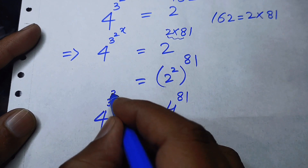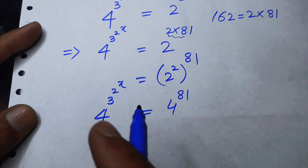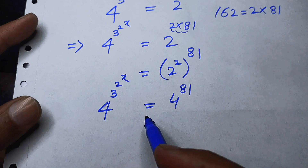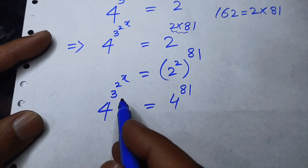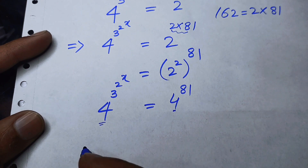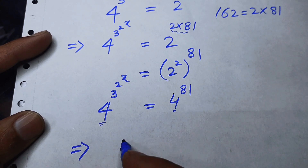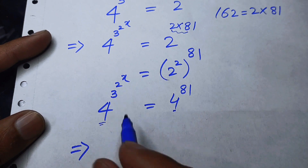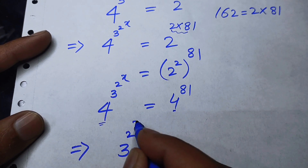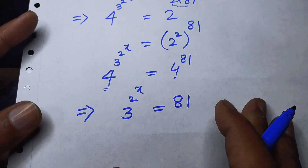The left-hand side can be written as 4 to the power of 3 to the power of x. These are nested exponents. When we compare both sides, the bases are the same, so we can equate the powers and write the nested exponent: 3 to the power of 2 to the power of x is equal to 81.